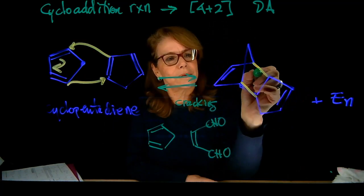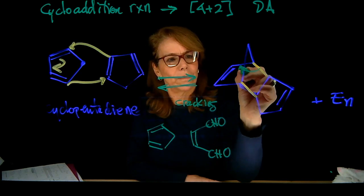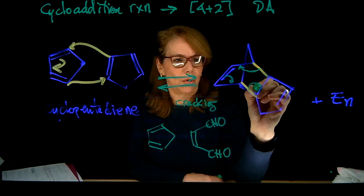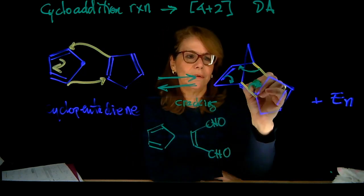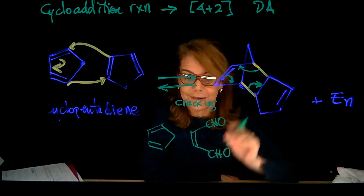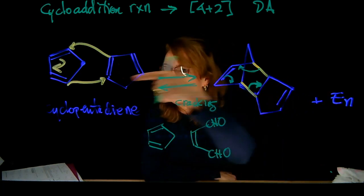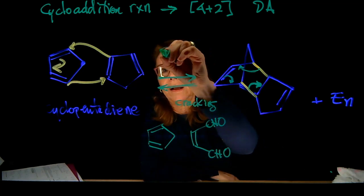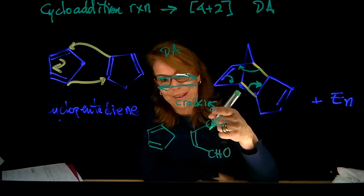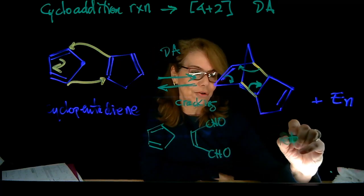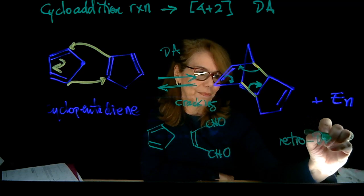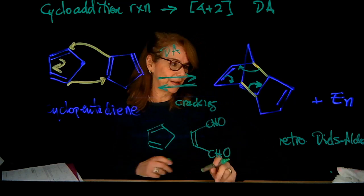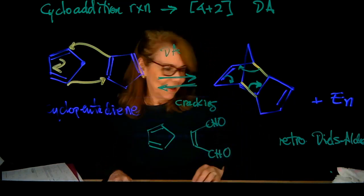Then we're going to break those bonds. We're going to go here, break that bond. And now this bond will go over here. Again, we're involving the six electrons. And that way, I am recovering cyclopentadiene. So here is the Diels-Alder reaction, and when I do the cracking, I'm doing the retro-Diels-Alder reaction. Following the same idea.